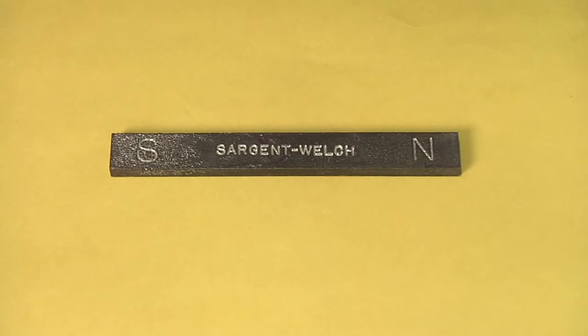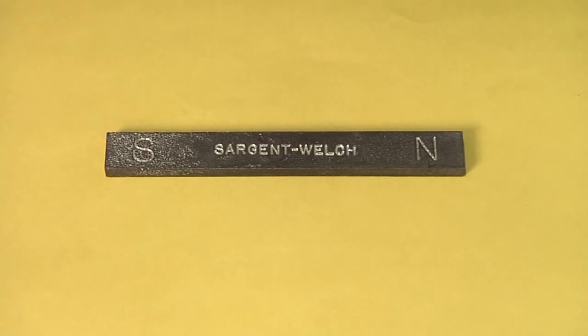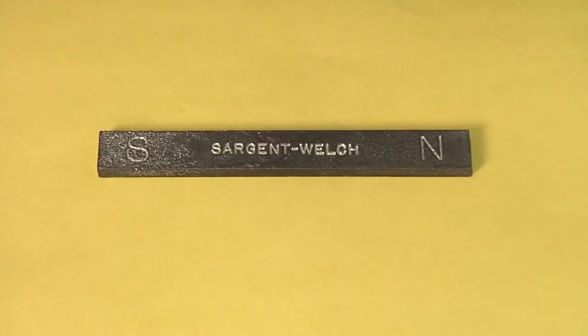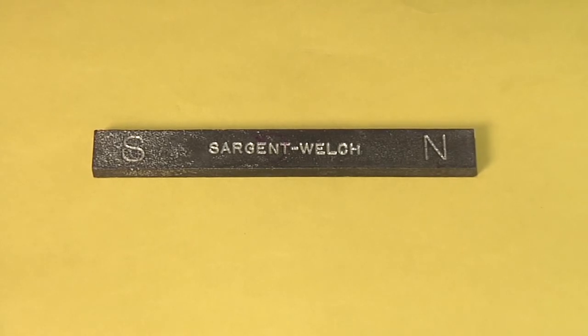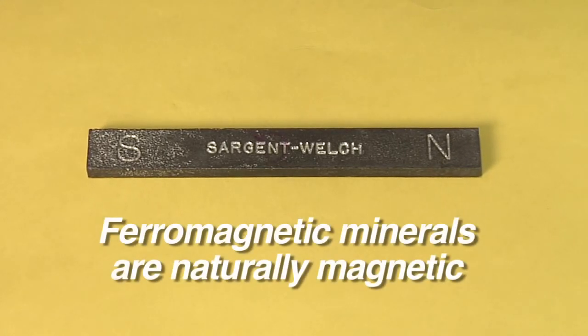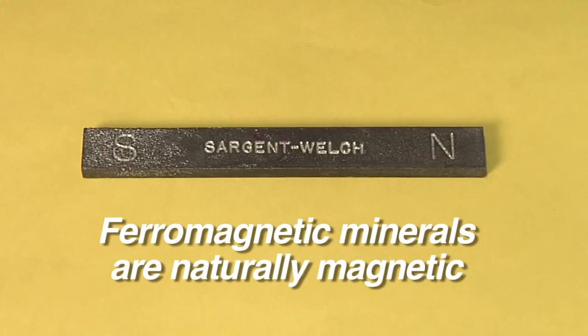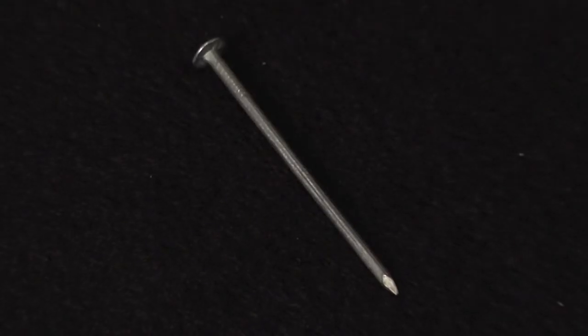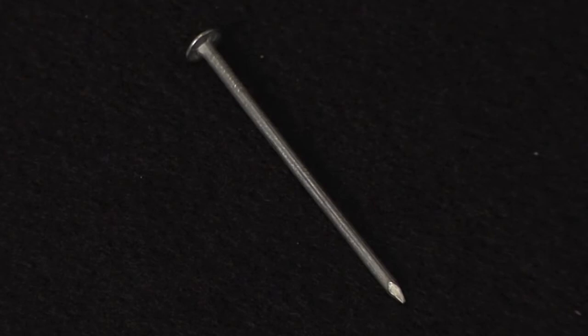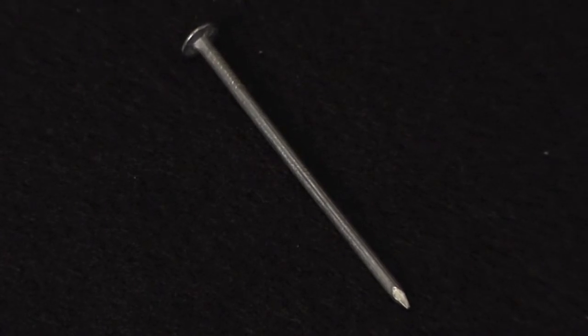So far, everything we've been talking about has to do with natural magnetism. The bar magnet was made of a kind of iron that is ferromagnetic, or naturally magnetic. Some materials, like those making up this nail, aren't naturally magnetic, but the nail can become temporarily magnetic.